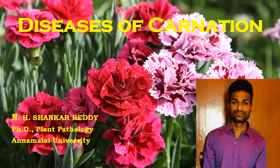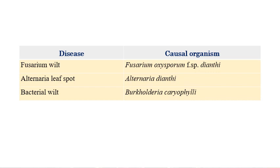Diseases of carnation — we will see the list of important diseases in carnation. My name is Janet Shankar and I am doing a PhD in Plant Pathology. These are the important diseases: the first one is Fusarium wilt, caused by Fusarium oxysporum f.sp. dianthi; the second is Alternaria leaf spot, caused by Alternaria dianthi; the third is bacterial wilt, caused by Burkholderia caryophylli.